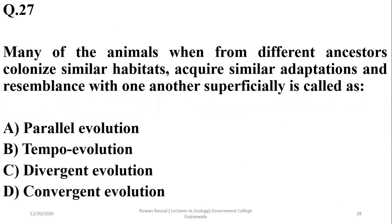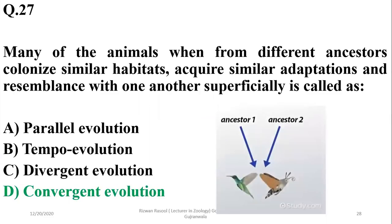Question 27: Many animals from different ancestors colonized similar habitats. Similar environmental pressures produce functional similarity, resulting in analogous organs — this is also known as convergent evolution. As seen in birds with wings and insects in the same habitat, they develop similar adaptations despite having different ancestors.